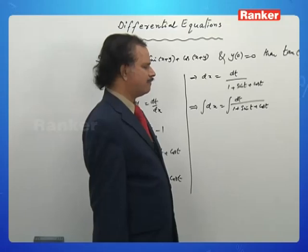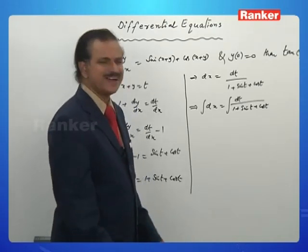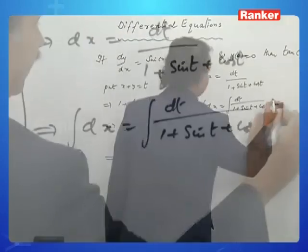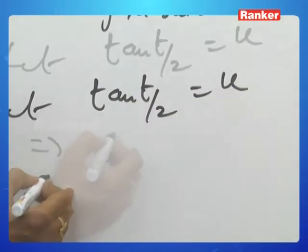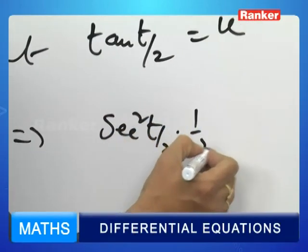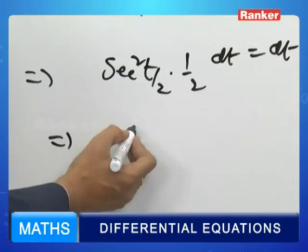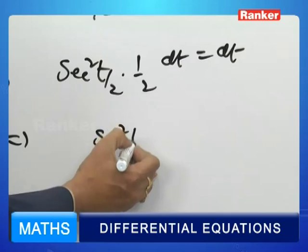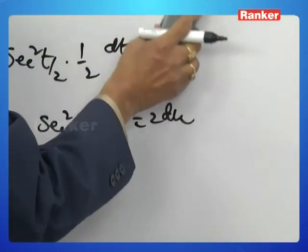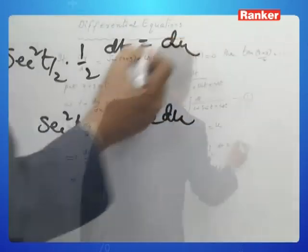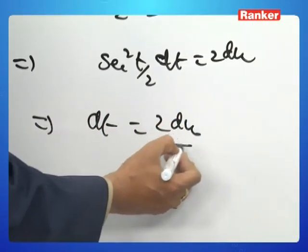This integral fits one of the most standard models. We use the substitution tan(t/2) equals u. Then sec²(t/2) times (1/2)dt equals du, so sec²(t/2)dt equals 2du. Since sec²(t/2) equals 1 plus u², we get dt equals 2du/(1 plus u²).